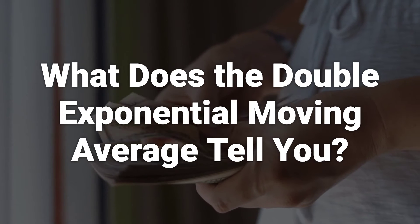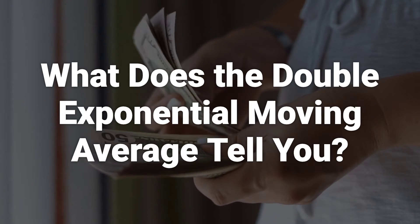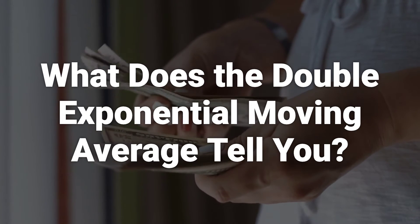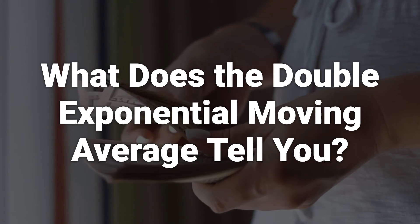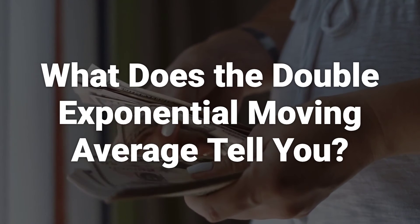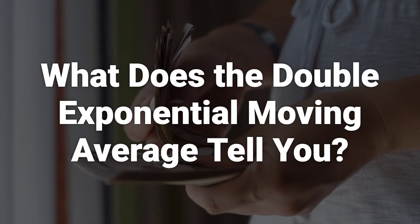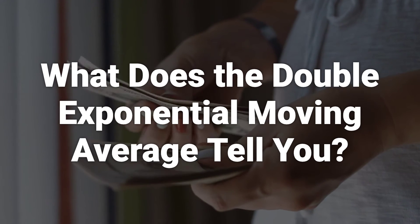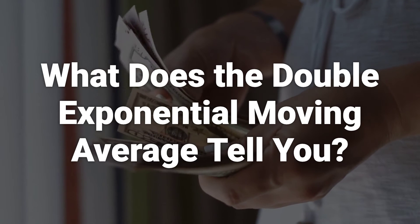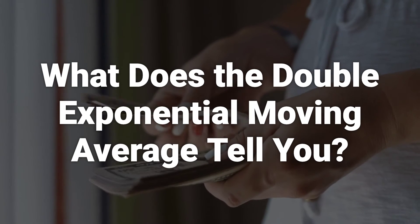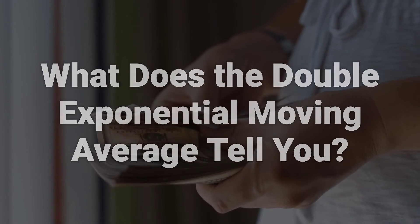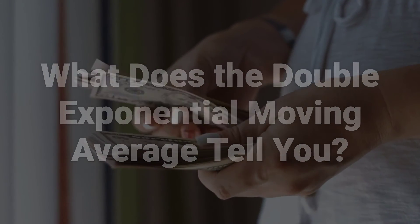Although the indicator is called a Double Exponential Moving Average, the equation does not rely on using a Double Exponential Smoothing Factor. Instead, the equation doubles the EMA but then cancels out the lag by subtracting a smoothed EMA. DEMA calculations require more data than straight Exponential Moving Average calculations, but spreadsheets and technical charting software can easily calculate DEMAs.